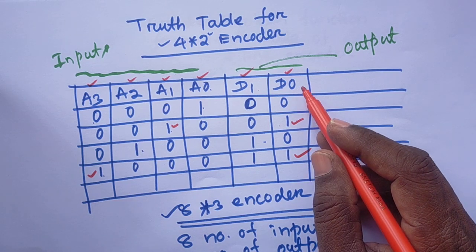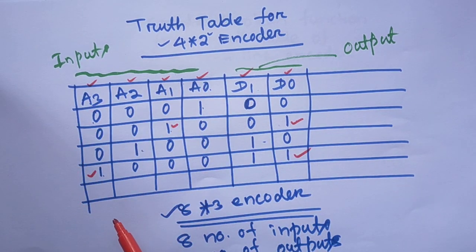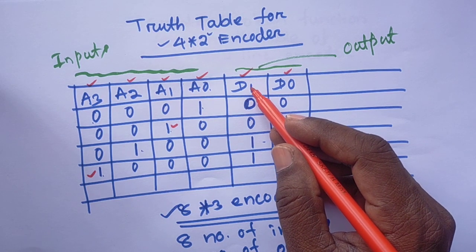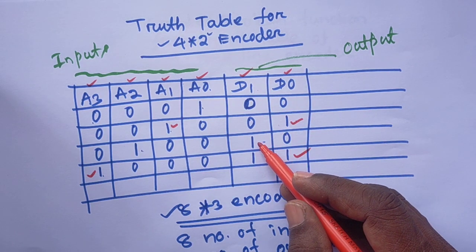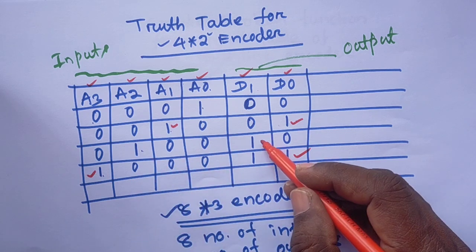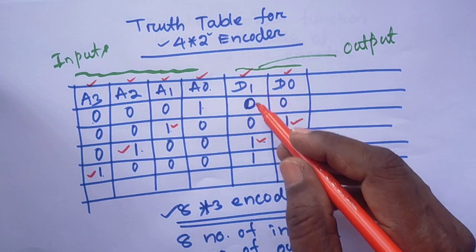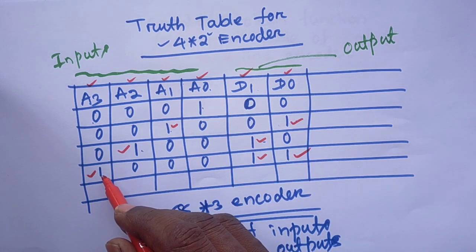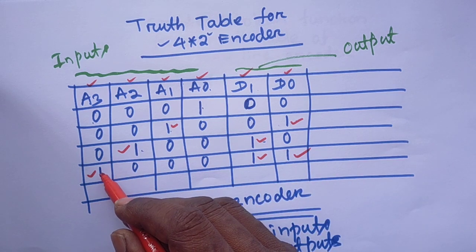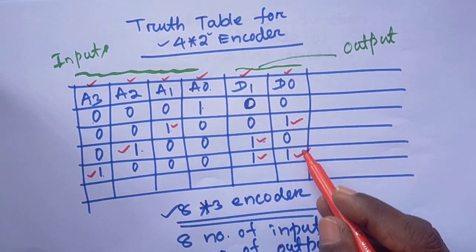Now we can understand how to define d0 — it is through a1 and a3. Similarly, another output d1 also has 1 values. For d1, one 1 value is defined through a2 — you see, same row, here a2 is 1. Another 1 for d1 is also here, and that 1 depends on a3. So a3 is already taken for d0, and again this 1 also depends on a3.